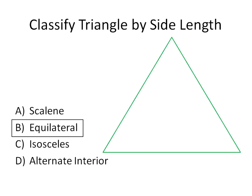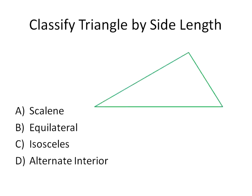How about this one? Are the side lengths isosceles with two equal side lengths, equilateral with three, or scalene with no equal side lengths? This one will be scalene — there's no side lengths here that are the same. This one is definitely shorter than this one and this one is the shortest of all.